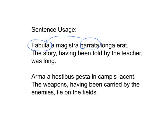Let's look at the second sentence. Can you guess what is the perfect passive participle in this second sentence? You're right if you said gesta. We know that because gesta is the fourth principal part of the verb. Can you tell what noun gesta describes? You're right if you said arma. Arma and gesta agree in number, gender, and case. They are both plural, nominative, neuter.